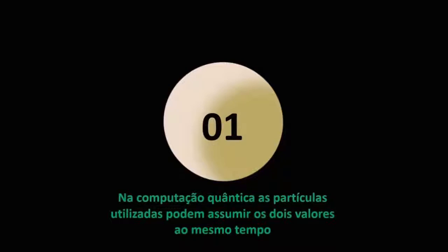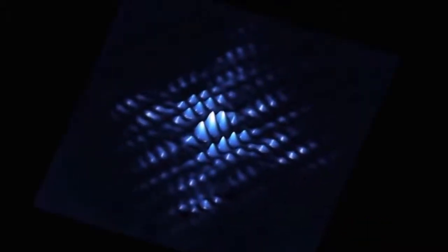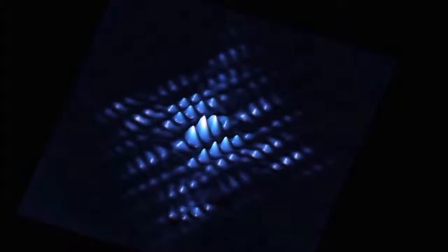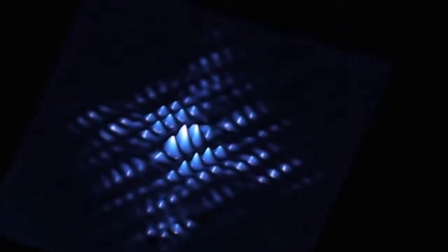Parece pouco se comparado ao já conhecido 0 e 1 do código binário que utilizamos hoje, pois passaríamos a utilizar 0 e 1 ou 0 e 1 ao mesmo tempo. Assim, teoricamente, teríamos, em vez de dois códigos, teríamos três. Mas essa terceira opção não seria uma terceira opção comum, mas uma terceira opção que tornará nossos computadores milhares de vezes mais rápidos e eficientes.